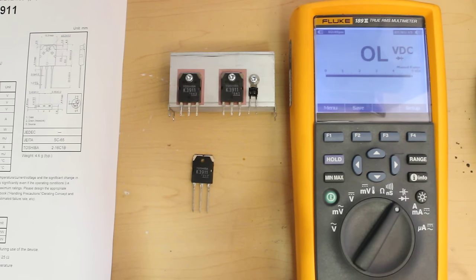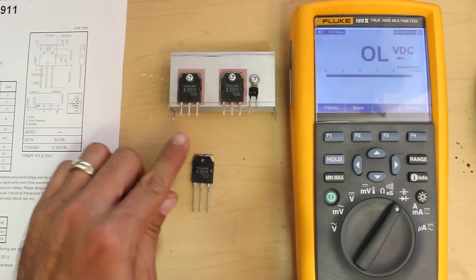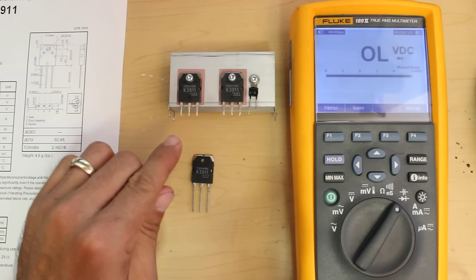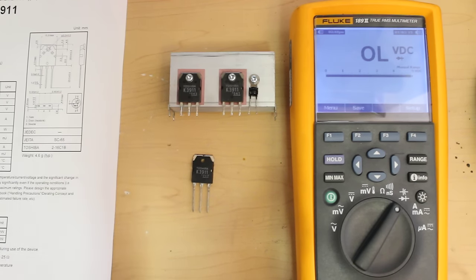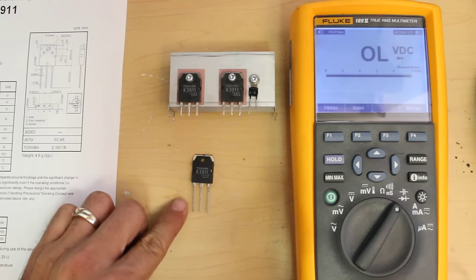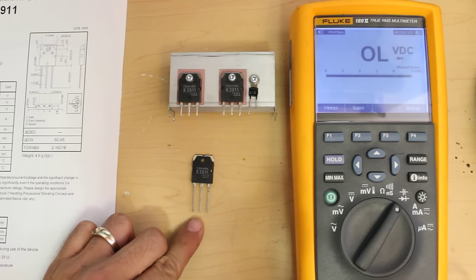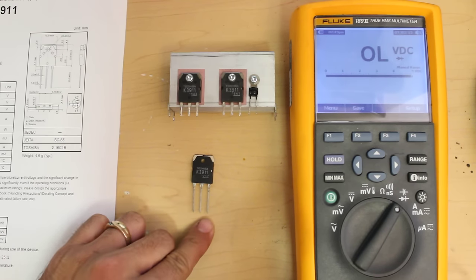The first thing you want to do is identify which pin of the three is the gate, the drain, and the source. In this case, my first pin is the gate, the second one is the drain, and the third one is the source.